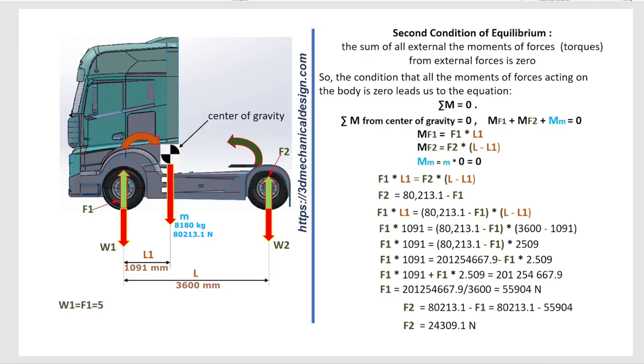W1 equals F1 equals 55904 Newtons. W2 equals F2 equals 24309.1 Newtons.